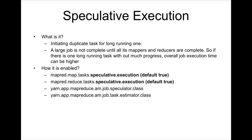Now we will talk about speculative execution. Sometimes when you submit a large job — say a job using 100 map tasks on a 10-node cluster — all tasks might be running very fast within 30 seconds, but one task is running very slowly with no progress. The issue could be a bug in code, a bug in JVM, or some hardware issue on that particular node. In that case, if speculative execution is enabled — which it is by default — it will create a duplicate task for that slow task, processing the same set of data on multiple nodes.